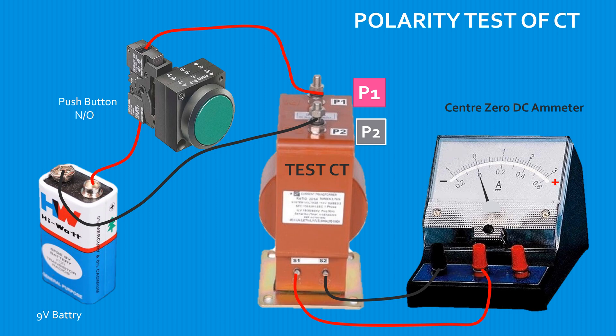Now when you press the test push button, if the pointer of the ammeter deflects to the positive side of the scale, then the assumed S1 and S2 are correct in polarity. Mark them permanently.